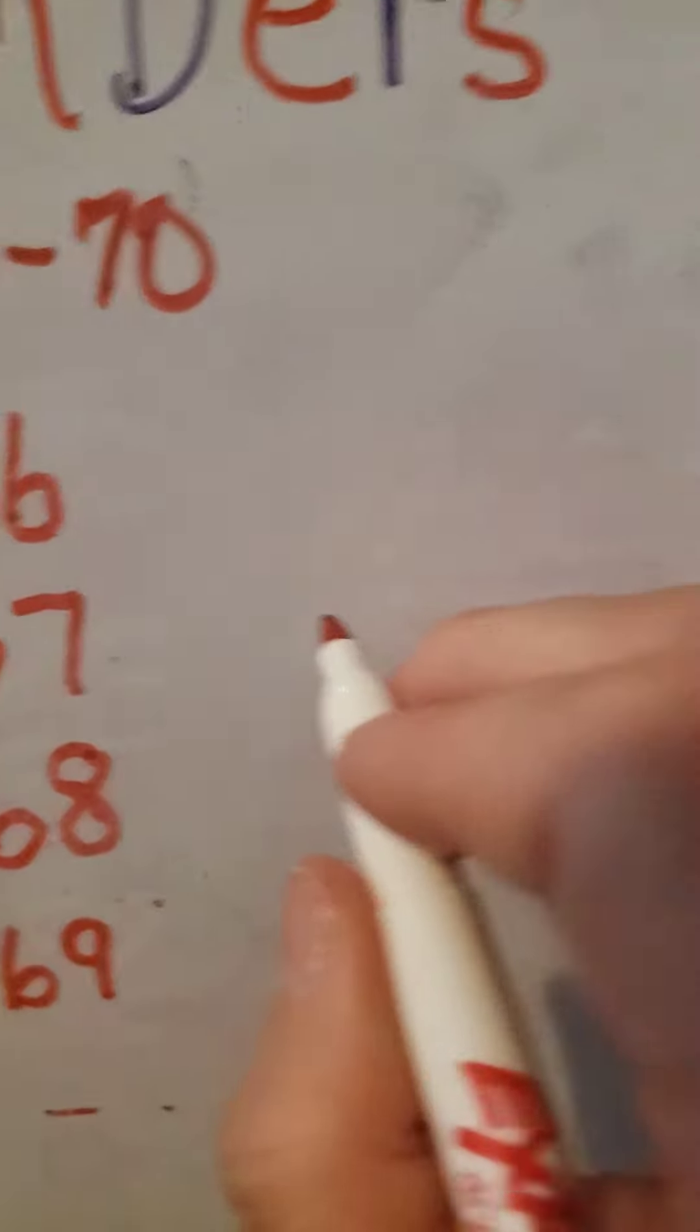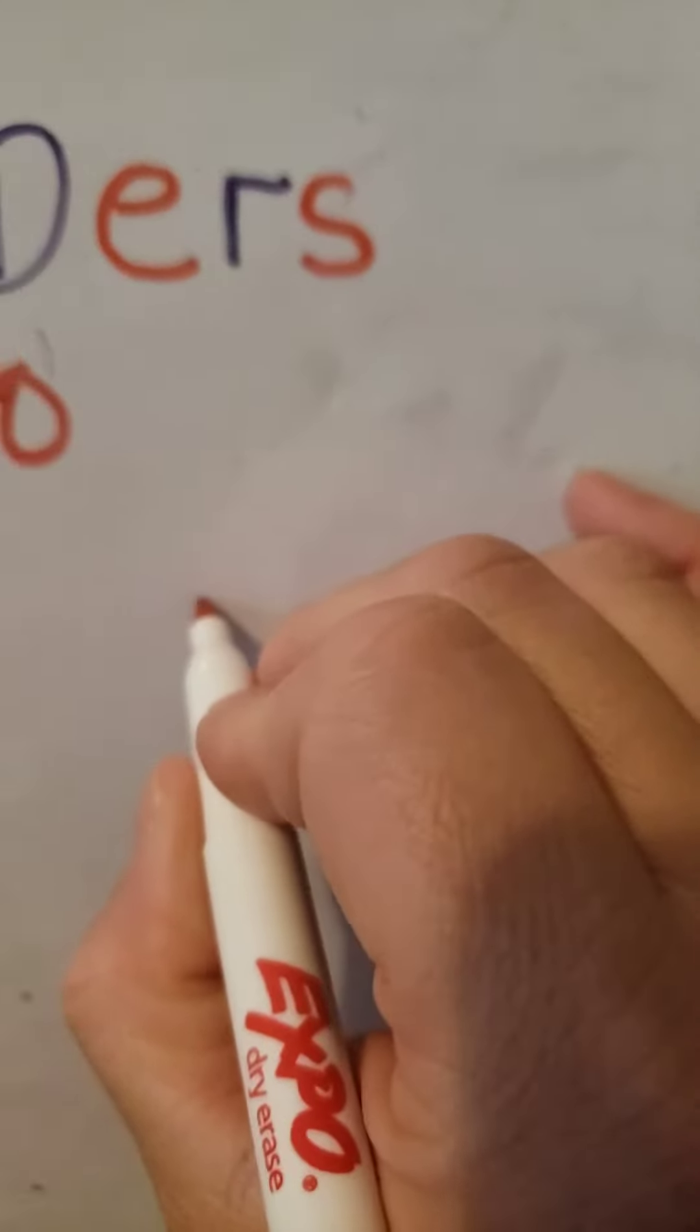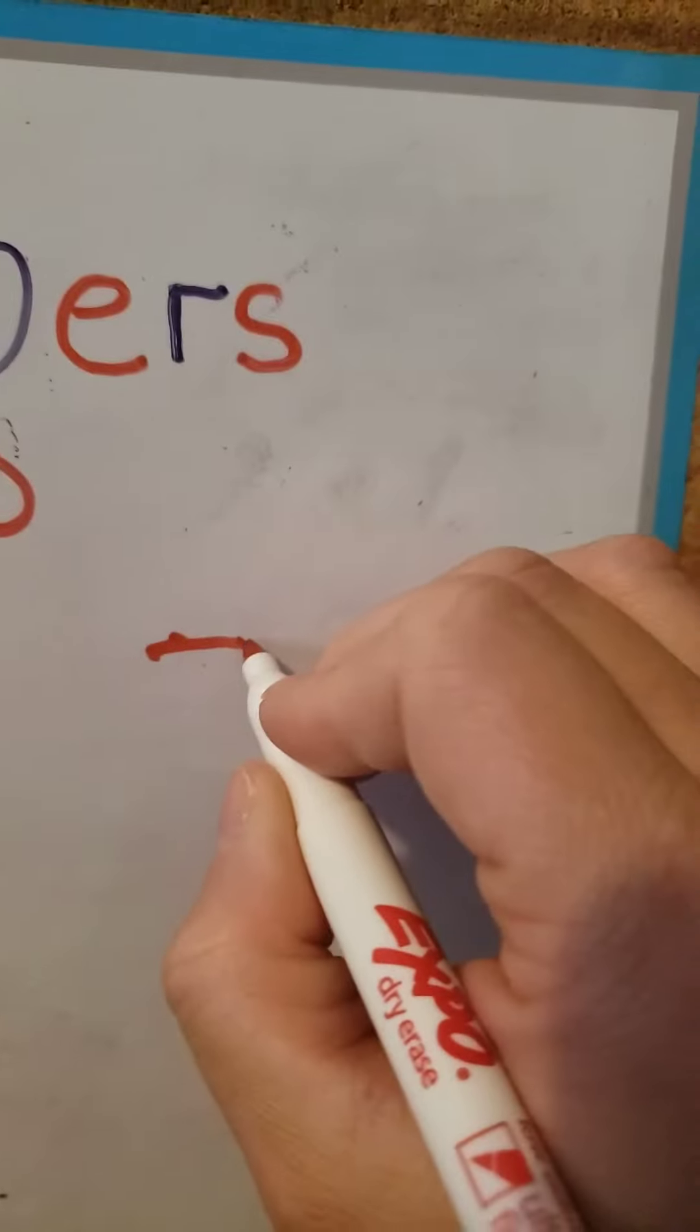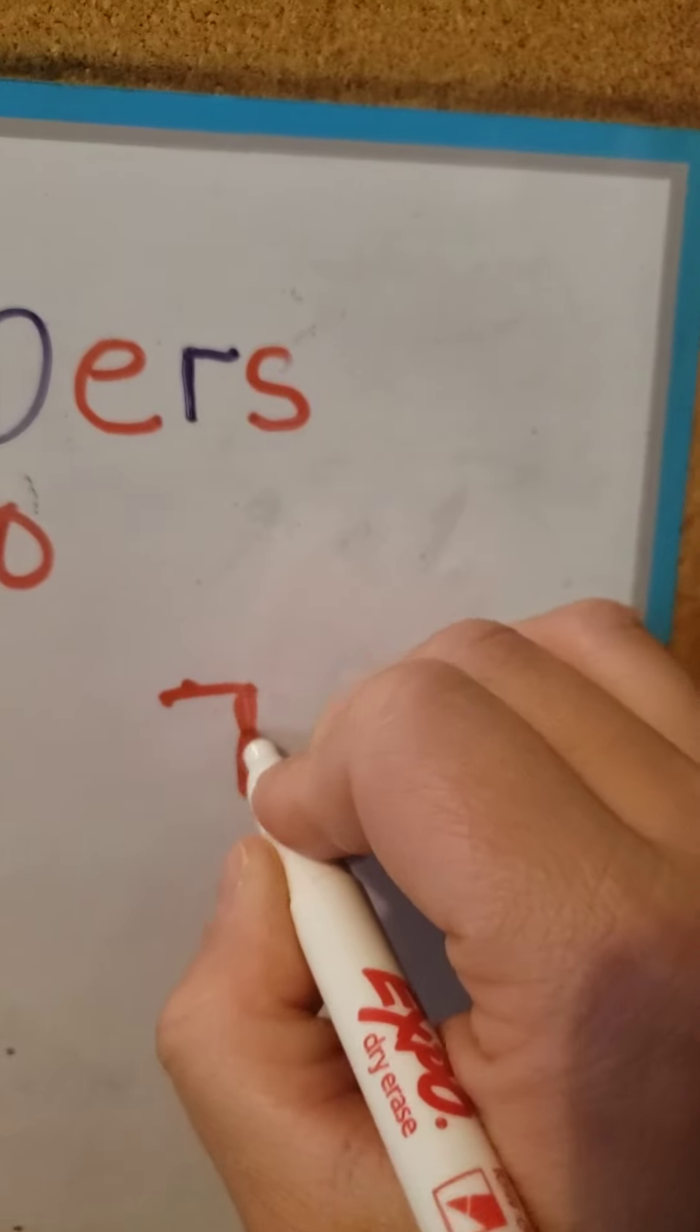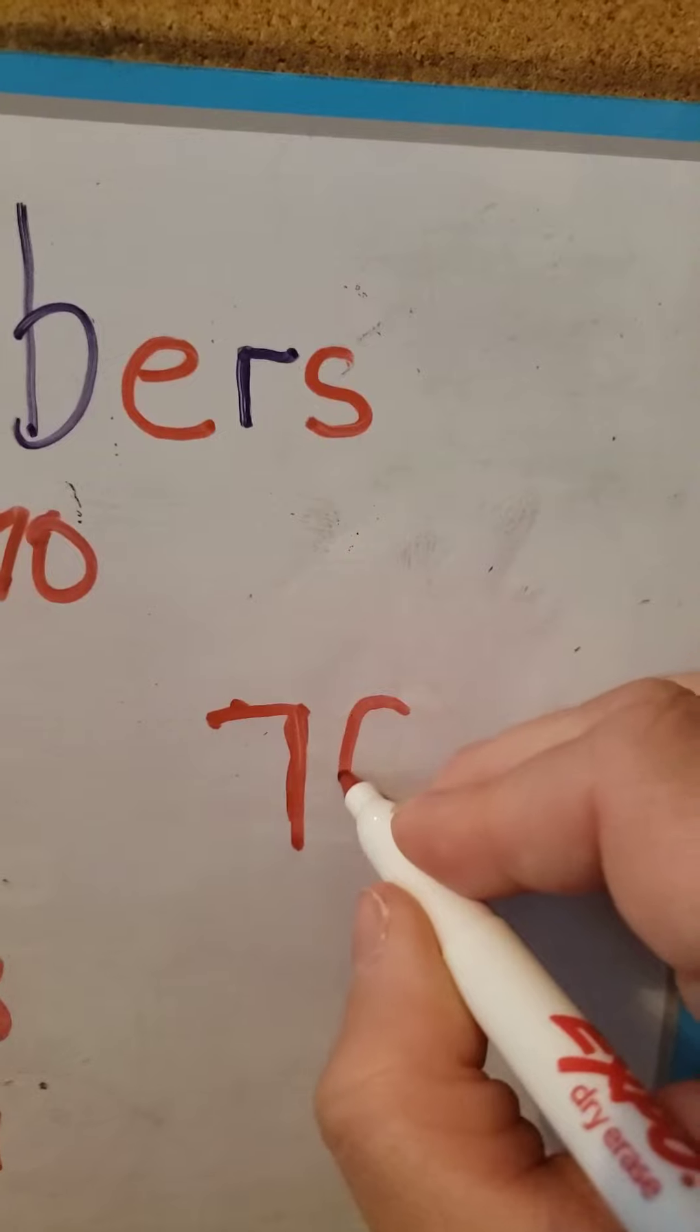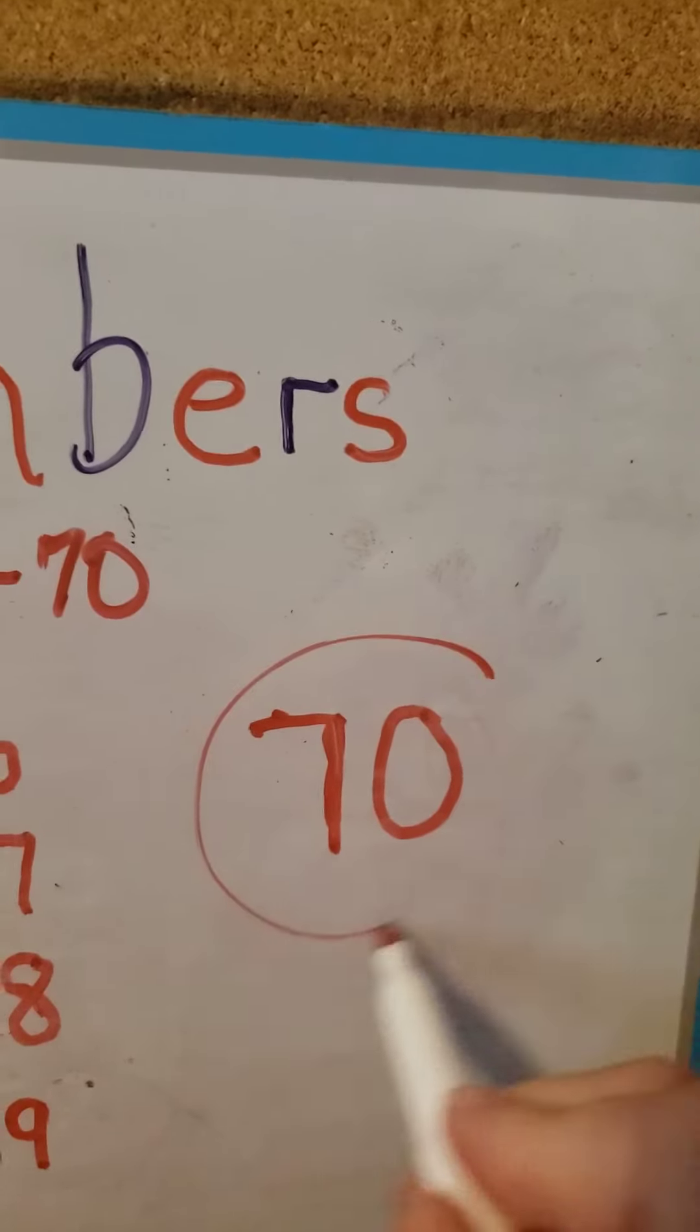And then in the 10 spot we're changing from a 6 to a 7, so we're going to start with the left, go to the right, come straight down for your 7, and then your 0. And now you have made 70.